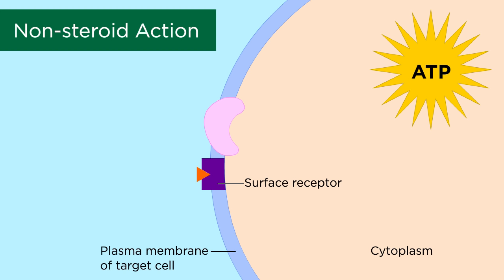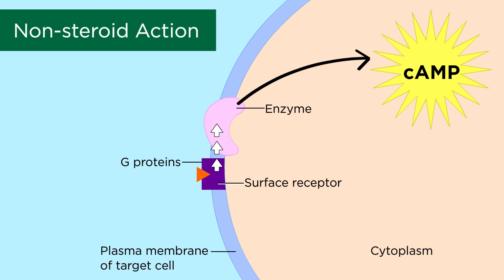There are proteins on the intracellular side of the target cell that are associated with the receptor. Most often, this involves what's called a G-protein. This G-protein is found next to an enzyme that converts ATP to a molecule called cyclic AMP, or cAMP. Cyclic AMP is called a second messenger because it signals a cascade of events that eventually change the enzymatic activity in a cell to cause the target cell response.